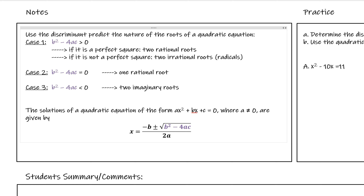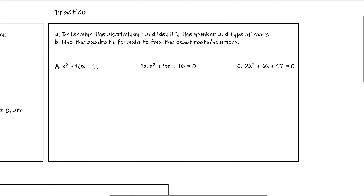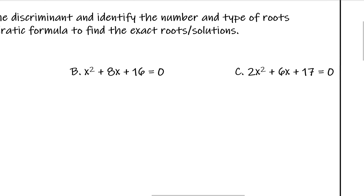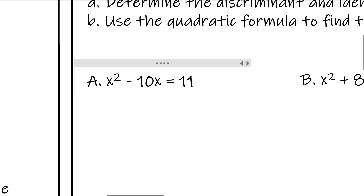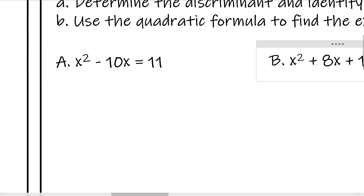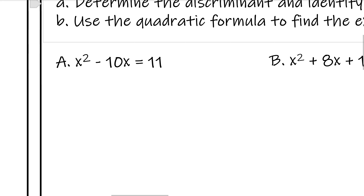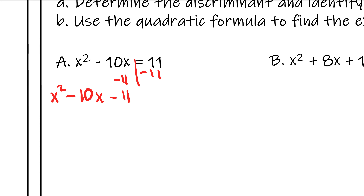For these examples, we're going to first use the discriminant to figure out what kind of roots we're going to have, and then we'll figure out our answer. For example A, the first thing we actually have to do is subtract 11 from both sides so that we have this equal to zero. That's going to give us x squared minus 10x minus 11 equals zero.